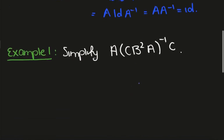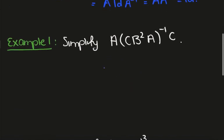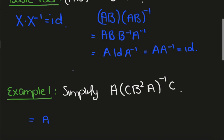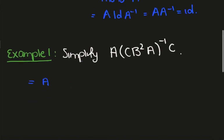Okay, so let's apply that to this example here. Simplify A times CB² A all inverted times C. So by the fact above we need to flip the order and invert each of them individually. So we end up with A inverse B to the minus 2 C inverse times C.